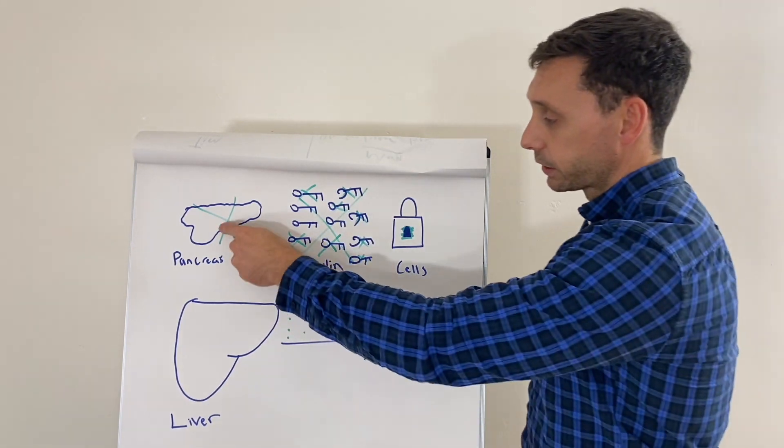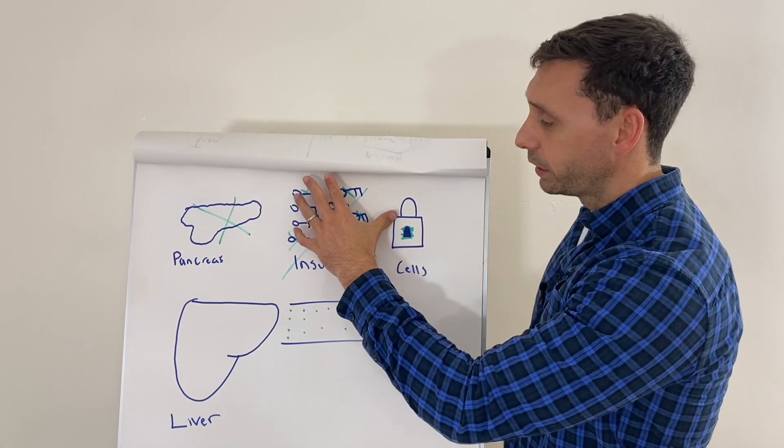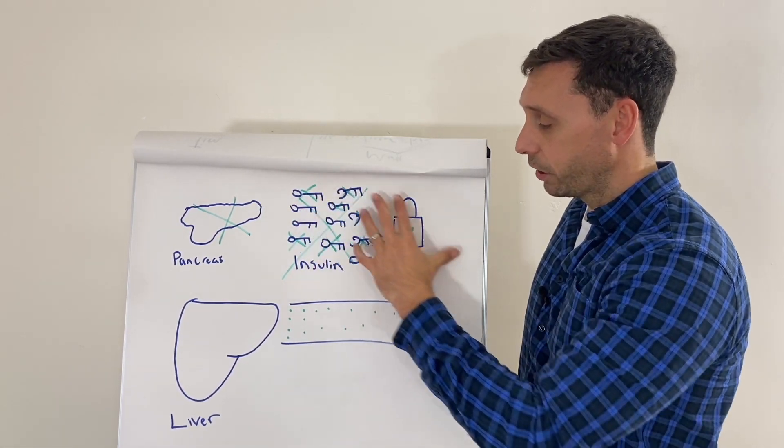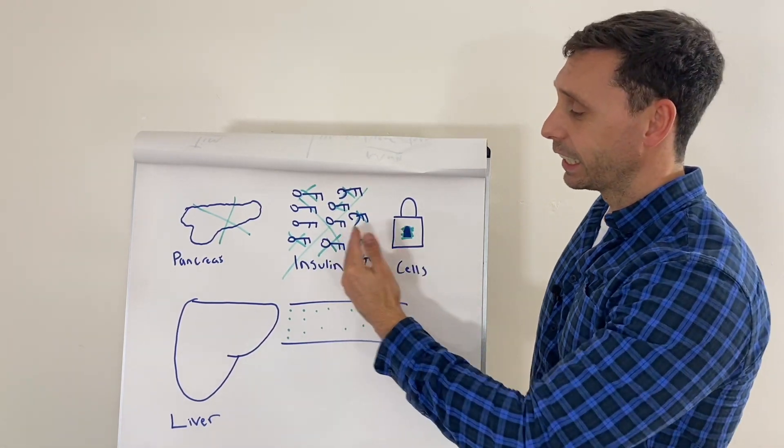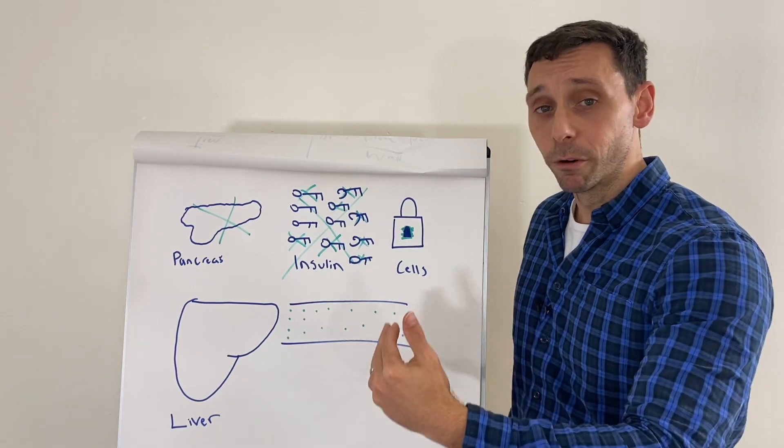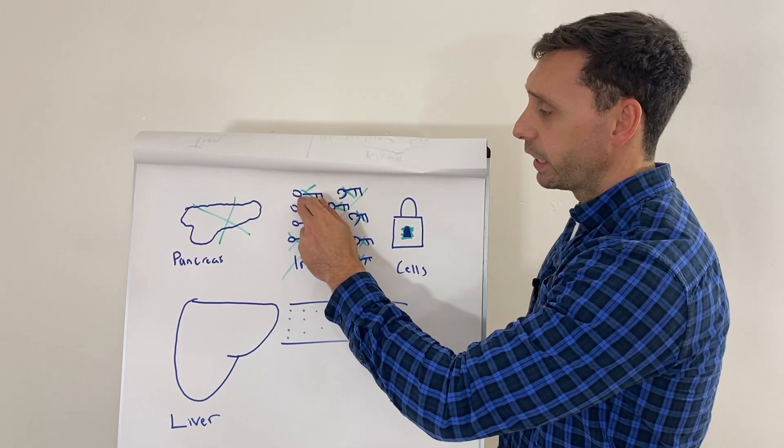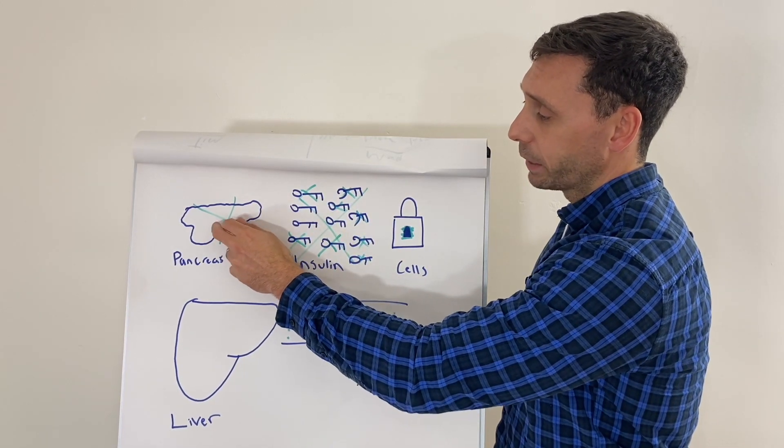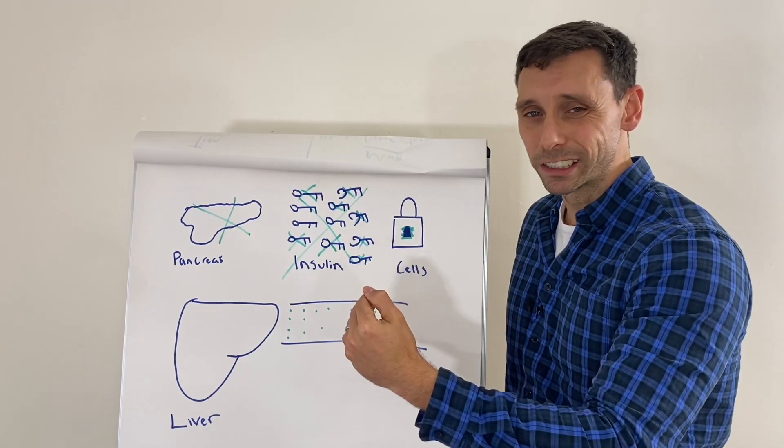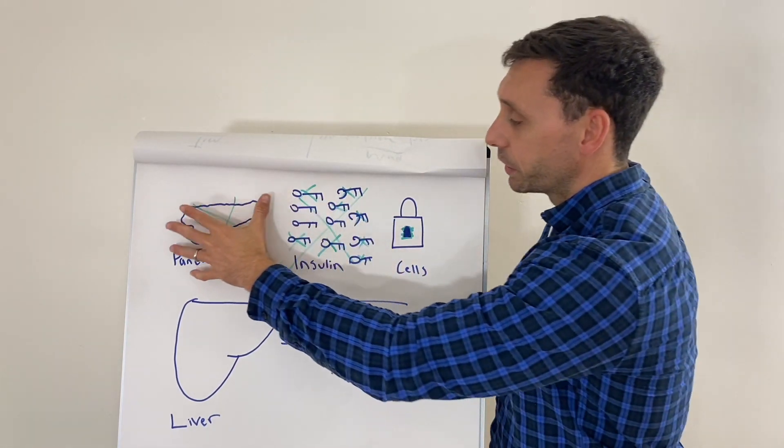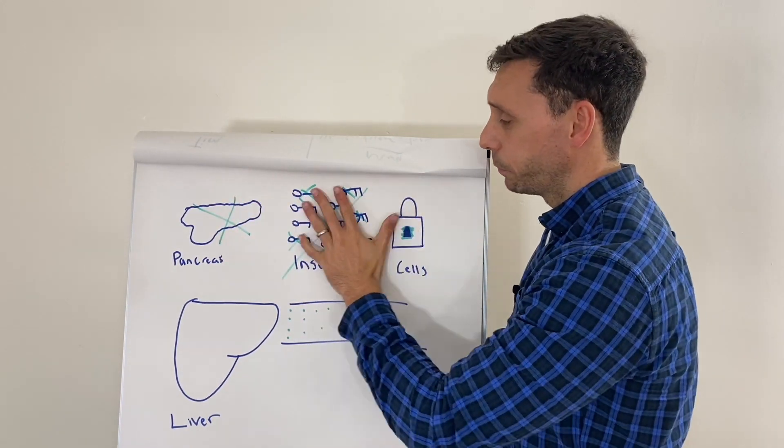Now, throughout this process, people will end up on varying degrees of different medications. For example, metformin increases the sensitivity of these keys to the locks. So you get more locks fit in the keys. And that allows your body to lower its blood glucose levels. Other medications like sulfonylureas, they produce more keys from your pancreas. They tell your pancreas to release more insulin, which means you just have more floating around, but it doesn't really address the underlying problem. So this is the first thing and probably the most common element of type 2 diabetes that people understand.